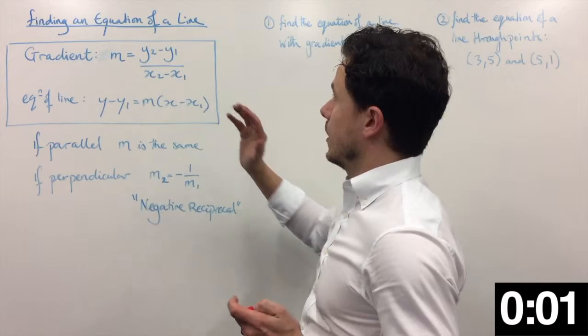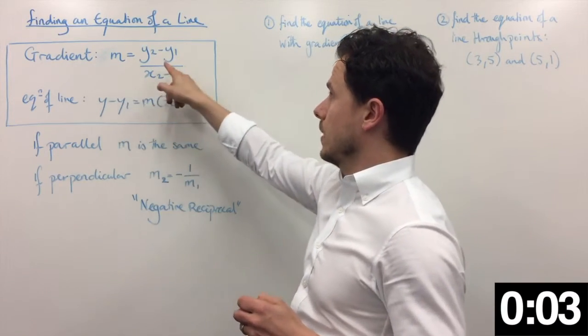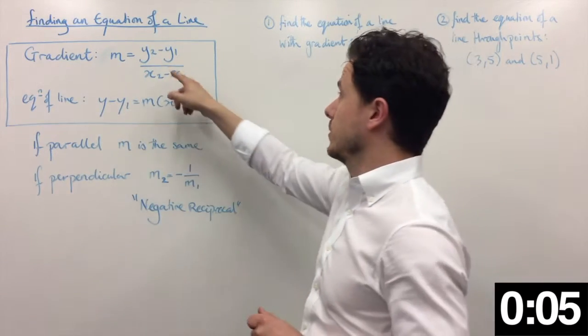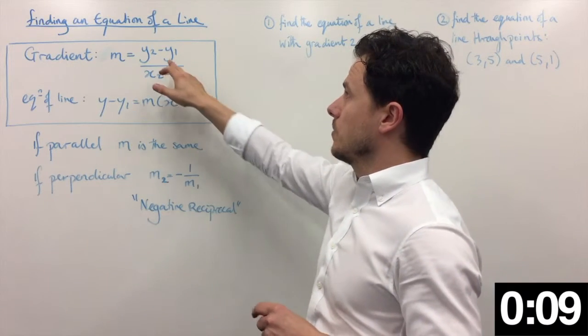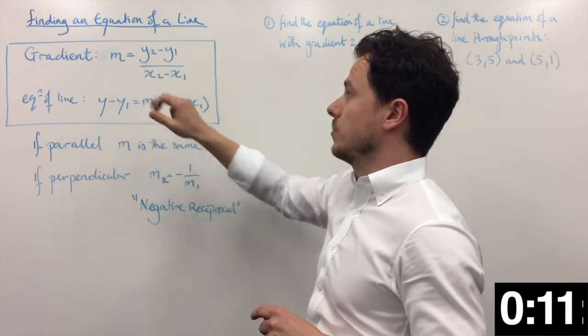Okay, here's a few of the key facts you need to know. We have gradient. For any two given random points, we've got y2 minus y1 over x2 minus x1. Make sure that you have y's above x's.